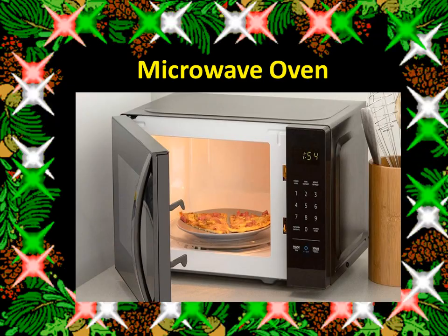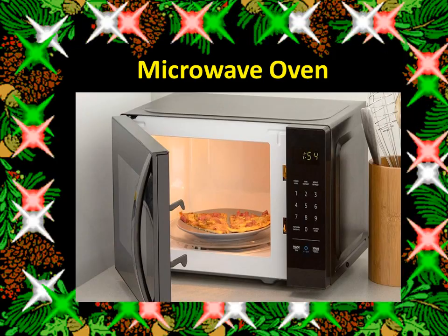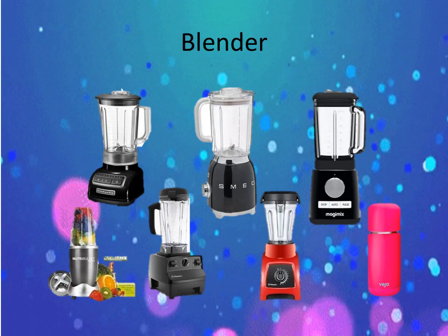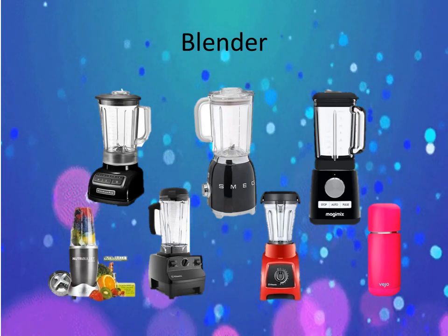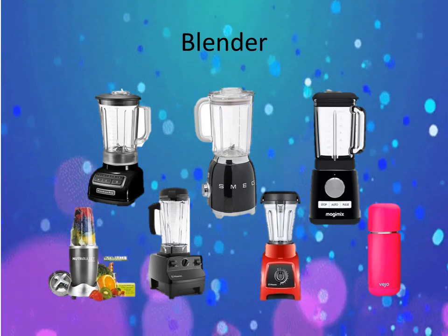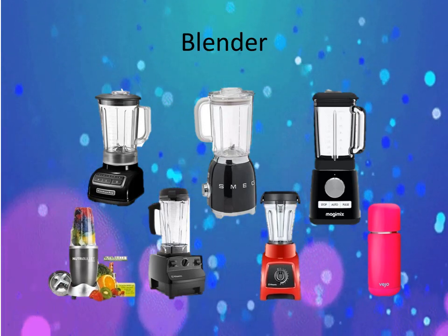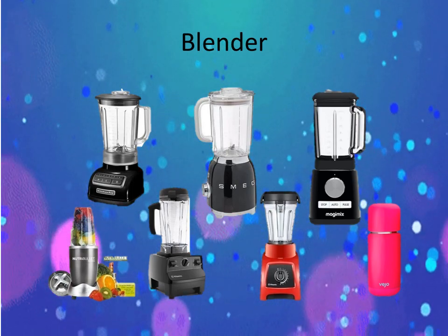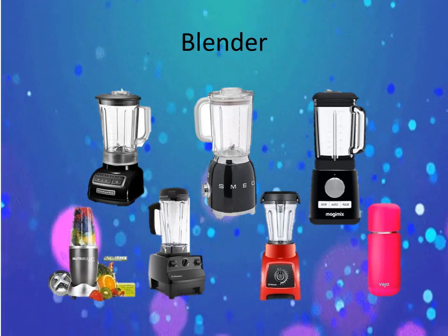Next we have microwave oven, which is used for cooking or heating food. Next we have a blender. It is used to chop, blend, mix, whip, puree, grate, and liquefy all kinds of food. A blender is a very useful appliance and varies in the amount of power — voltage or wattage. We have a handy blender, the small one, and the conventional blender, the old type.